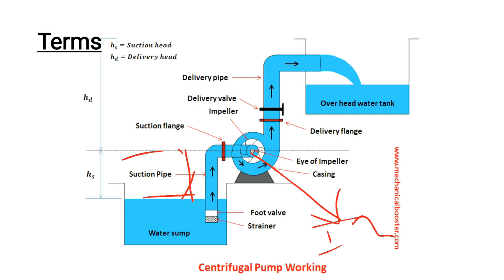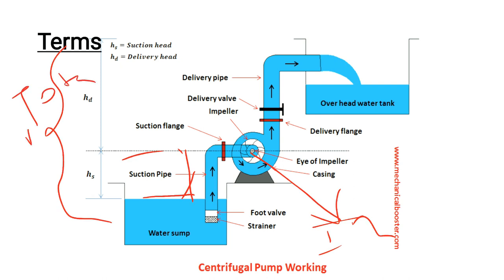The delivery head is the distance over which we discharge the water. The total major head is the sum of the suction head and the discharge head — we call this the total major head.